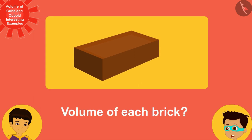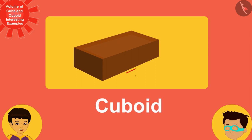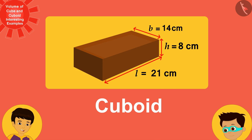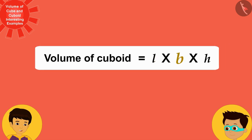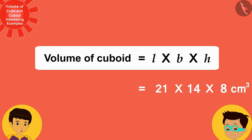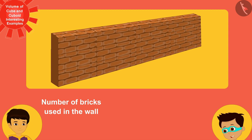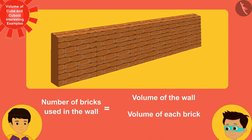Each brick is cuboid in shape, having 21 centimeters, 14 centimeters, and 8 centimeters as the length, breadth, and height respectively. Now I will write the length, breadth, and height of the brick in the formula instead of L, B, and H to find the volume of the cuboid brick.